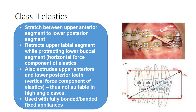Class 2 elastics are utilized especially when camouflage is undertaken together with extraction. They are stretched between the upper anterior segment and the lower posterior segment. The horizontal force component retracts the upper labial segment while protracting the lower buccal segment. There is also a vertical force component that extrudes the upper anterior and lower posterior teeth; therefore, these elastics should be used with caution in high angle cases. They are normally used with fully bonded or banded fixed appliances.